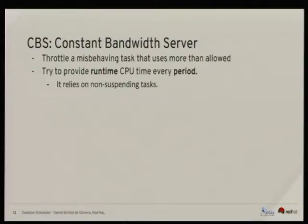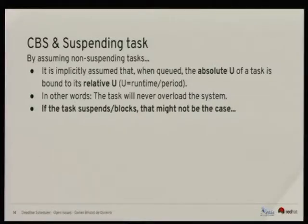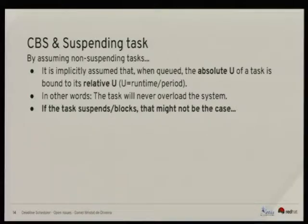We use the CBS — the Constant Bandwidth Server. When a task tries to run longer than configured, it is throttled. One open issue is that it relies on non-suspending tasks. A non-suspending task, once it starts to run, runs until the end without blocking, sleeping, or suspending. The ECBS tries to guarantee that the utilization of the task — the current parameters — means the absolute utilization is never higher than the relative parameters we set.